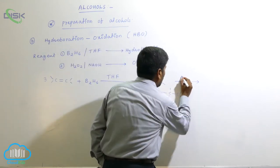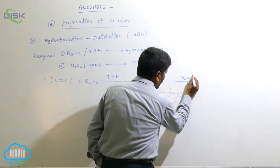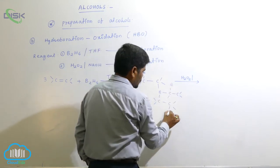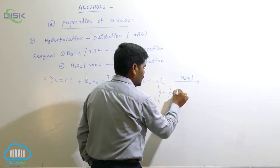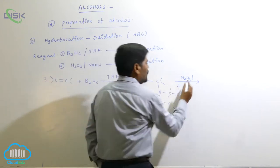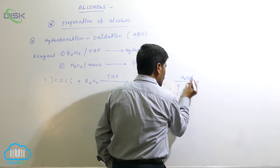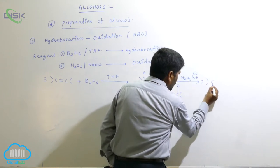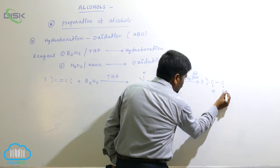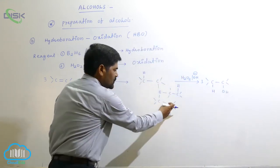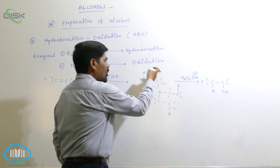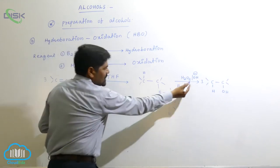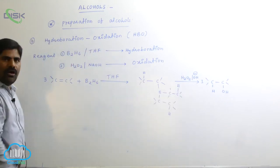If you then use hydrogen peroxide H2O2 with hydroboration followed by oxidation with OH⁻, it converts into 3 moles of alcohol — one alcohol, a second alcohol, and a third alcohol. So the first step is hydroboration and the second step is oxidation.